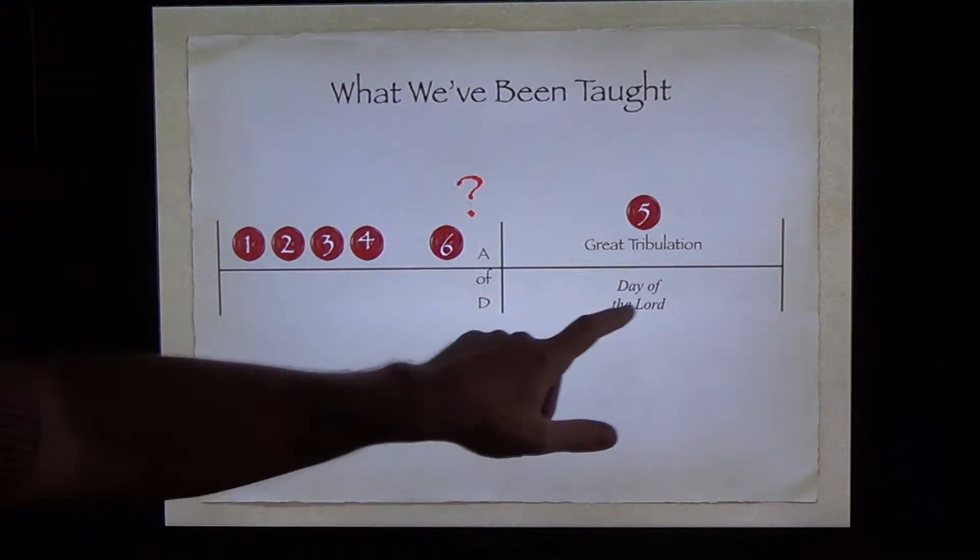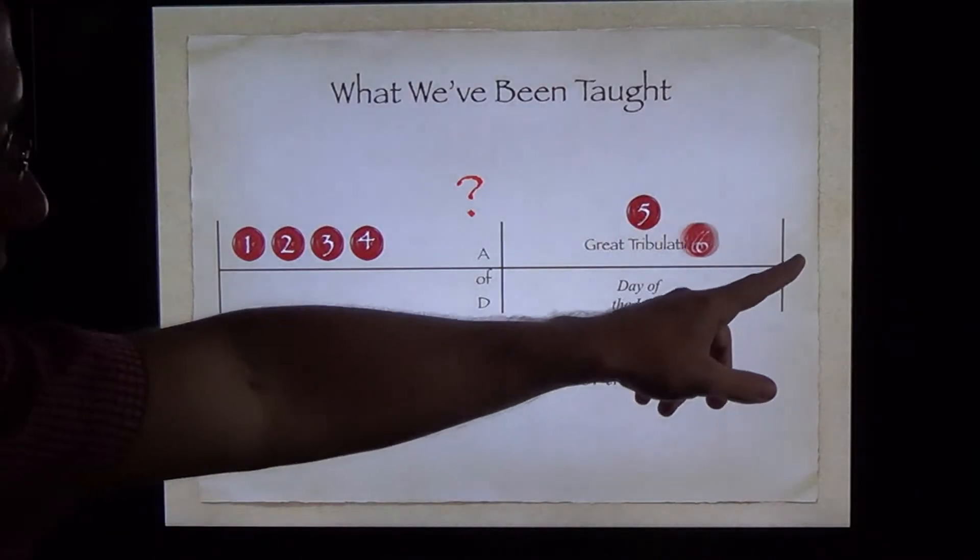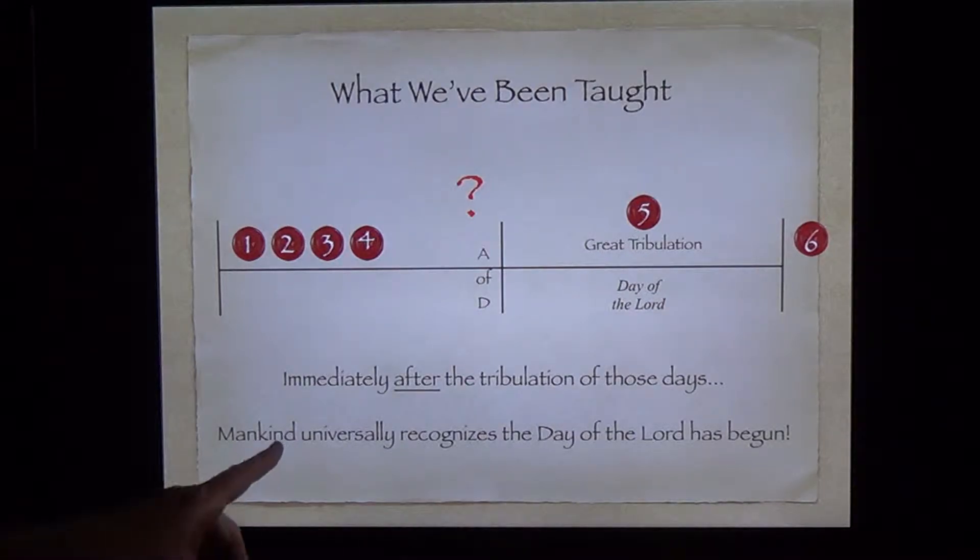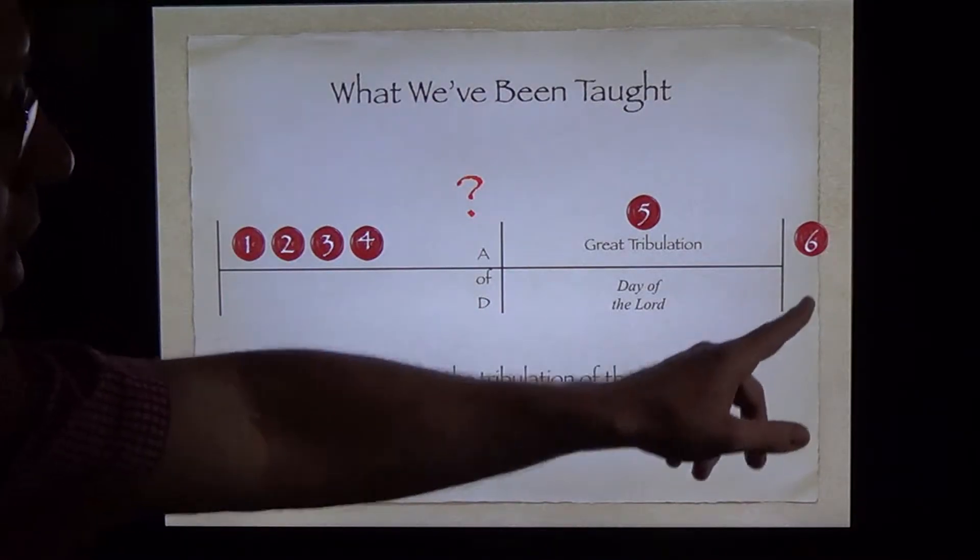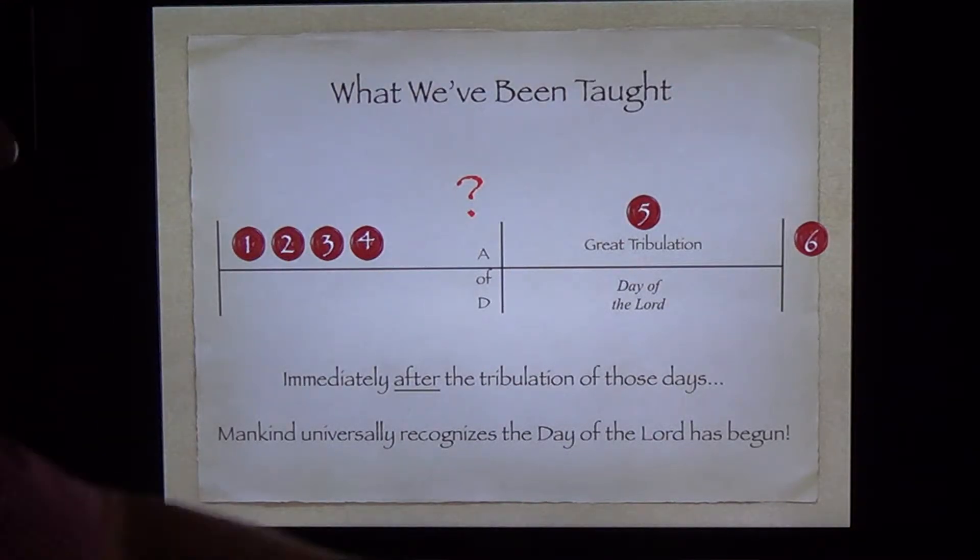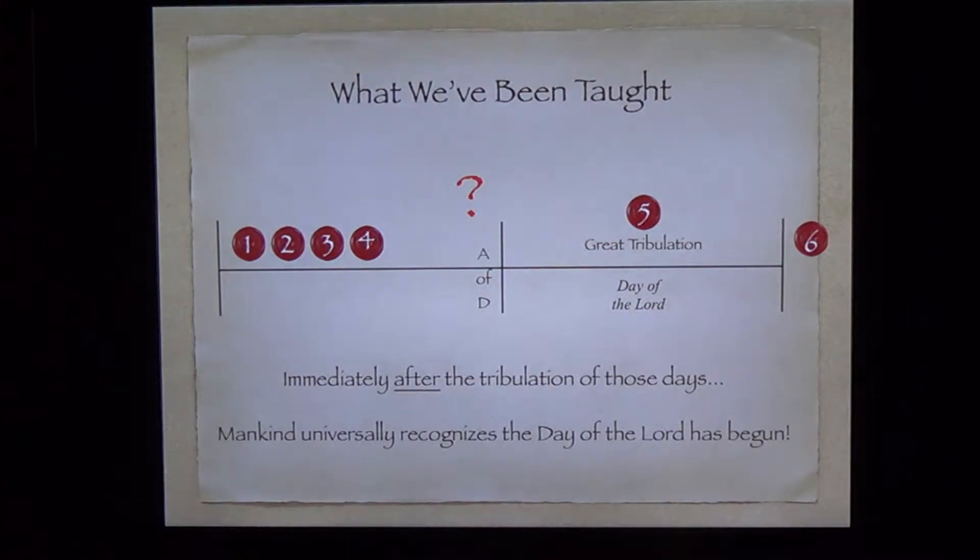But how can this be the day of the Lord if the sixth seal, which is opened immediately after the Tribulation of those days, is when the world universally recognizes the day of the Lord has begun? Remember what the world says when the sixth seal is open. They're telling us when the day of the Lord begins, that it's upon them, the day of His wrath has come, and who shall be able to stand? They're telling us universal recognition when the day of the Lord begins.